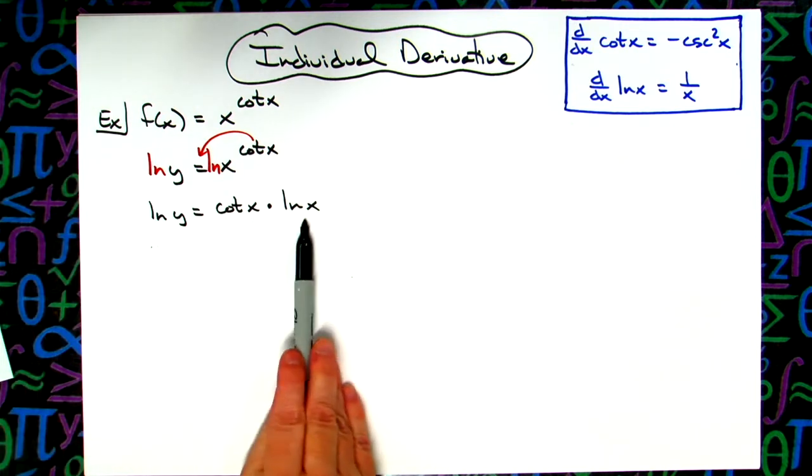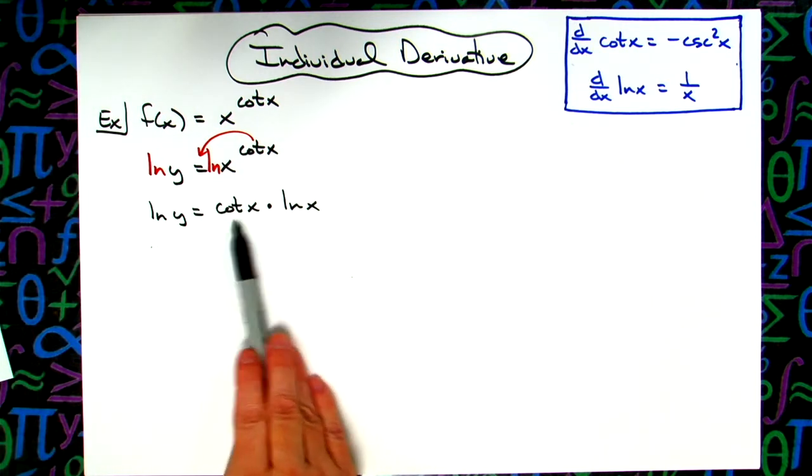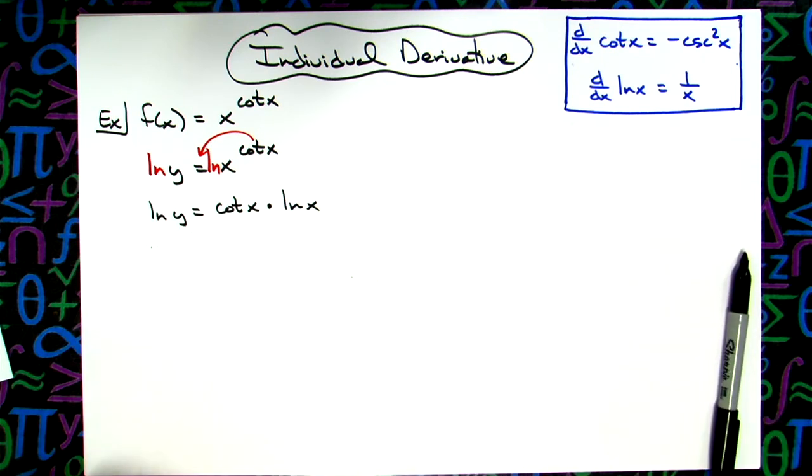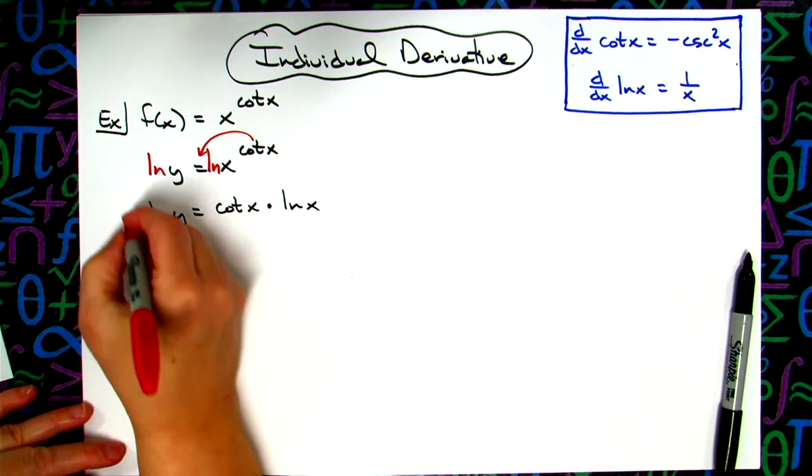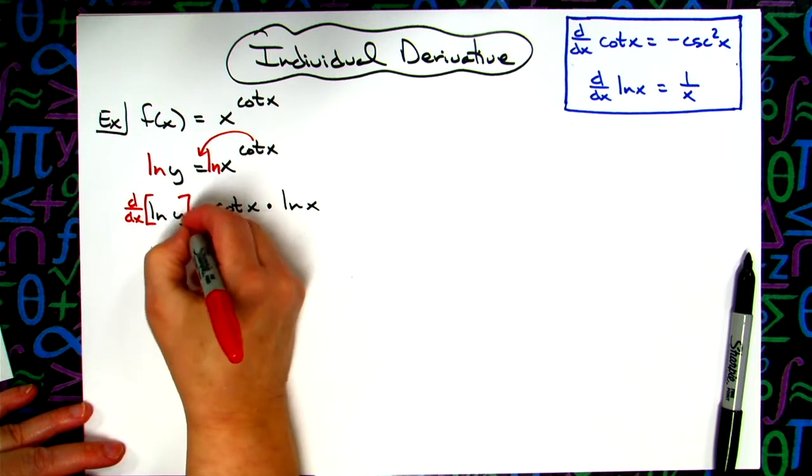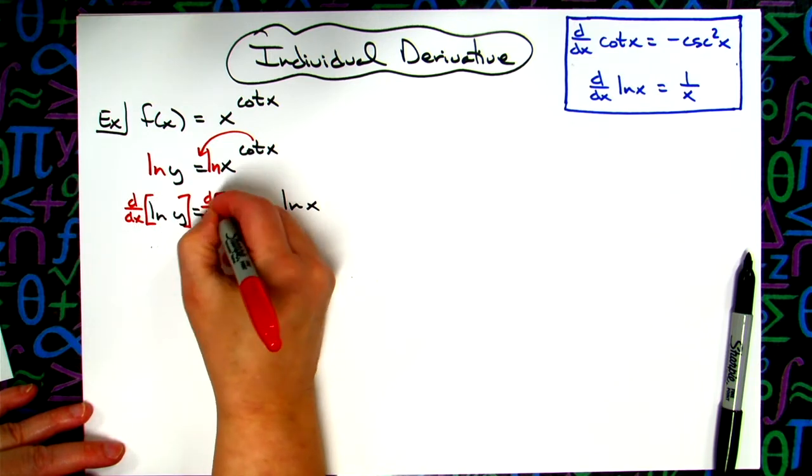Now we can see that this is going to lend itself really nicely to product rule on this side and implicit differentiation here when I take the derivative of this side. So now that I've done that algebra manipulation, I'm ready to take the derivative: d/dx of the left-hand side and d/dx of the right-hand side.